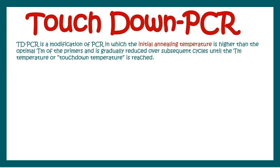Touchdown PCR is not a totally different type of PCR — it's just a modification of the existing PCR protocol. In this protocol, the initial annealing temperature is higher than the optimal annealing temperature and gradually reduces to the optimal temperature. This enhances the specificity and yield of the PCR reaction.